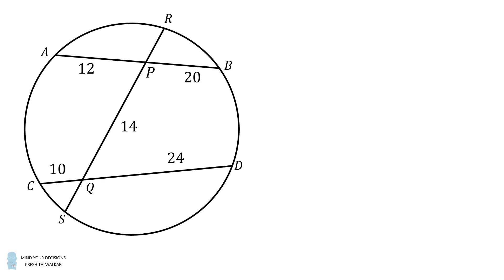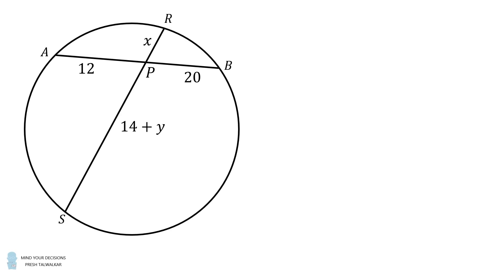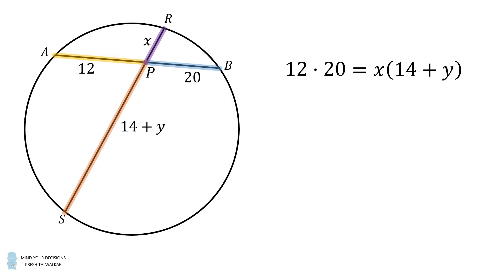Let's take a look. Suppose that PR equals X and QS equals Y. Focus on chord AB. Notice that PS equals 14 plus Y. By the intersecting chords theorem, we have AP multiplied by PB — that's 12 multiplied by 20 — is equal to RP multiplied by PS, that's X multiplied by the quantity 14 plus Y.